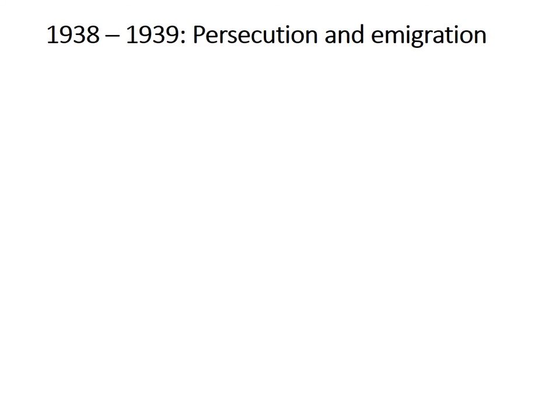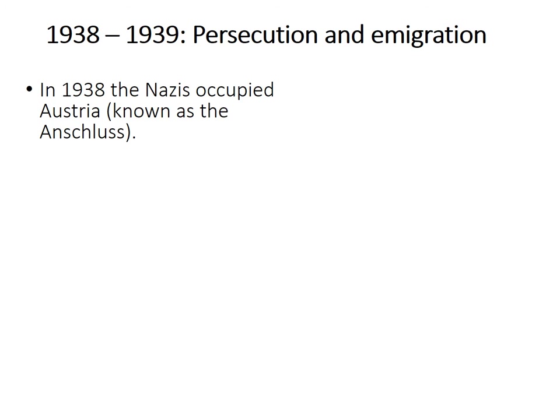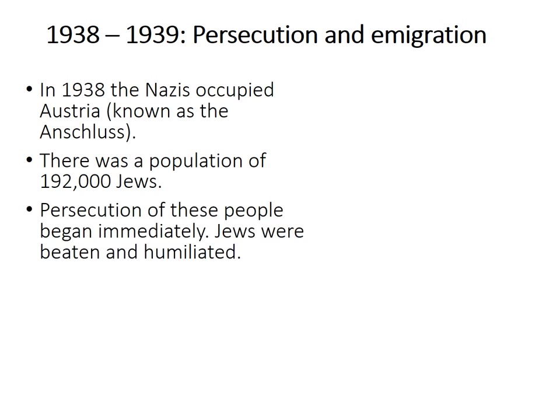The first stage of the Holocaust was about persecution and in particular emigration — people leaving their original countries to go elsewhere. That policy begins when the Nazis occupy Austria before the start of the Second World War in 1938. That occupation is known as the Anschluss, which means the joining of Germany and Austria together. In Austria there was a population of 192,000 Jews, and as soon as the Nazis occupied Austria, the persecution of those people began. Jews are beaten and humiliated.